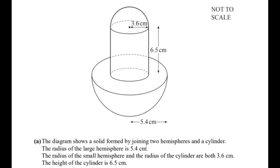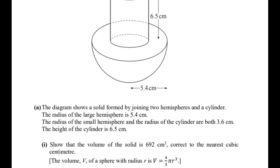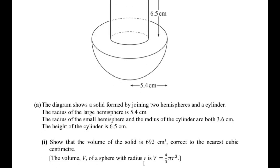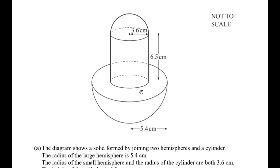The diagram shows a solid formed by joining two hemispheres and a cylinder. The radius of the larger hemisphere is given as 5.4 centimeters. The radius of the small hemisphere and the radius of the cylinder are both 3.6 centimeters. The height of the cylinder is given as 6.5 centimeters. We need to show that the volume of the solid is 692 cubic centimeters. The volume of a sphere with radius r is given by the formula v = (4/3)πr³.